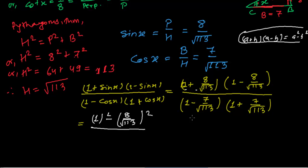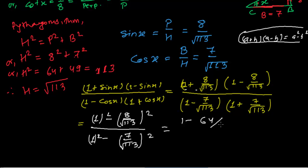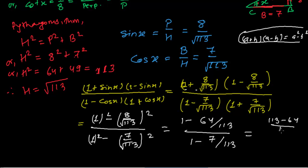Expanding: the numerator is 1 − 64/113. Taking the LCM, that is (113 − 64)/113 = 49/113. The denominator is 1 − 49/113, which is (113 − 49)/113 = 64/113.